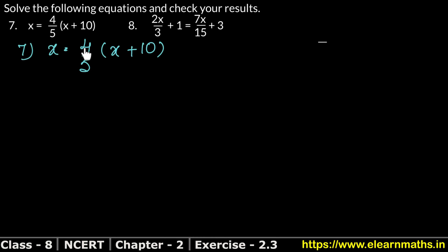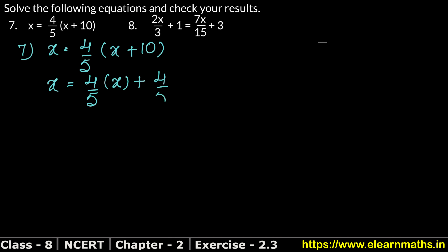Or you can do this: multiply 4 upon 5 on both sides — the answer will be the same. So, x equals, opening the bracket: 4 upon 5 into x, plus 4 upon 5 into 10.